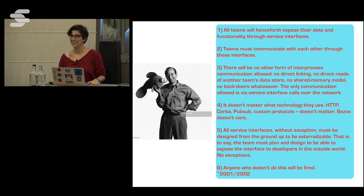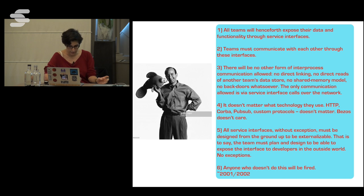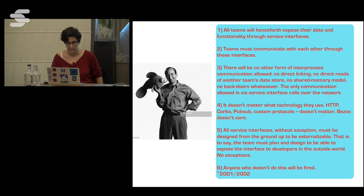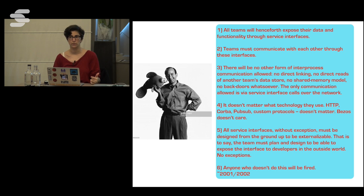This is Jeff Bezos. There's a memo he apparently sent around 2001–2002. The first item: all teams will henceforth expose their data and functionality through service interfaces. The last item: if you don't do this, you will be fired. This shows a vision of turning everything into services for cross-departmental and cross-company use of hardware and software resources — which turned out to be Amazon Cloud.